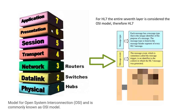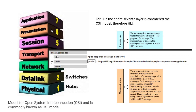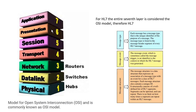The message event, which is sometimes called the message trigger, is an identifier to the context in which the HL7 message was generated. After the message type and message event, we have the message structure. The message structure is a data structure that expresses an association of a message type with an event for a class of HL7 messages. Each message structure also contains a unique identifier or ID, and structurally consists of a well-defined list of HL7 segments.